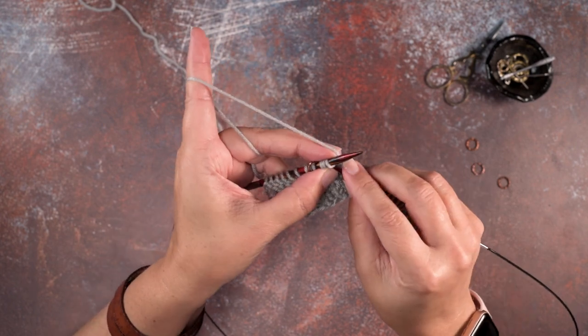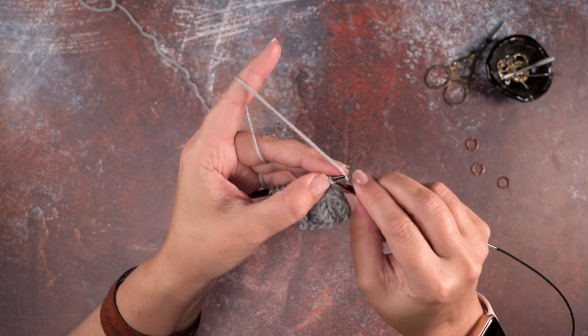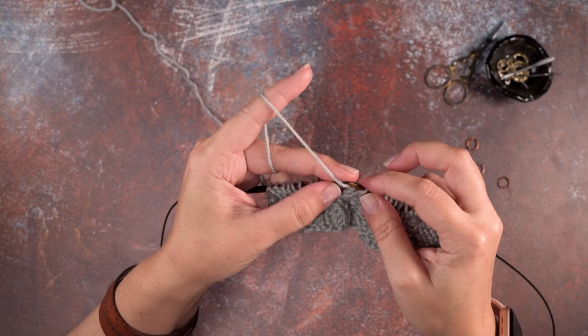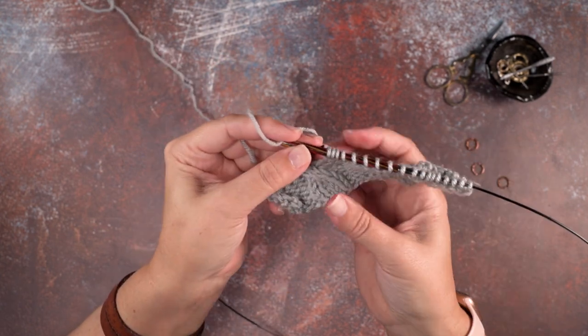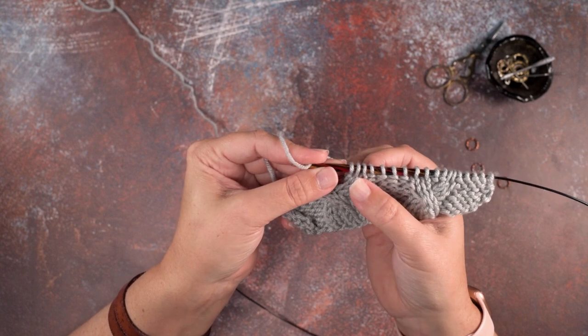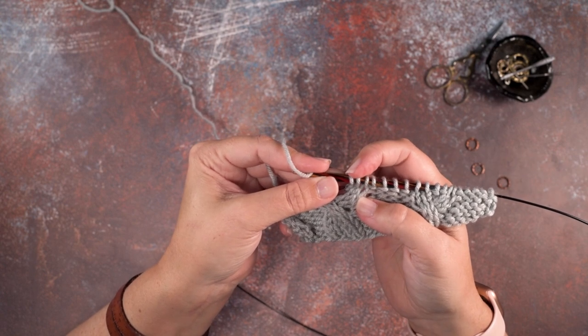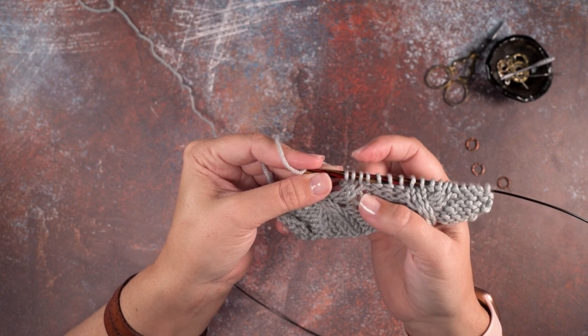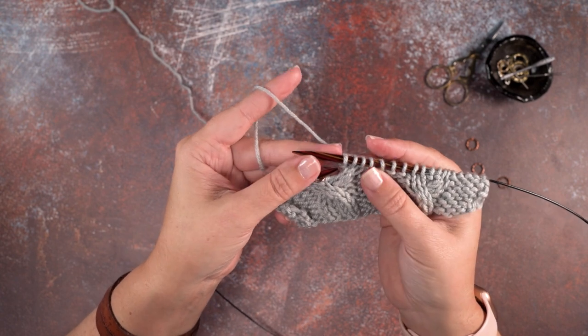Now we just work that cable. Knit two and purl one. So essentially we've just worked this right leaning cable without reserving the part of the stitches onto a cable needle. We just used our working needles to do so.